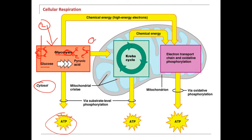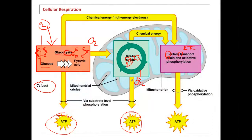If oxygen is available, pyruvic acid can enter the mitochondria for the Krebs cycle and the electron transport chain (ETC). The Krebs cycle requires a lot of B vitamins, especially B1, B2, and B3, and gives off a lot of CO₂ — carbon dioxide. That's why it's called cellular respiration: we breathe in oxygen and give off CO₂. The Krebs cycle also produces ATP and creates the chemical energy and coenzymes needed for the electron transport chain, which makes lots of ATP.